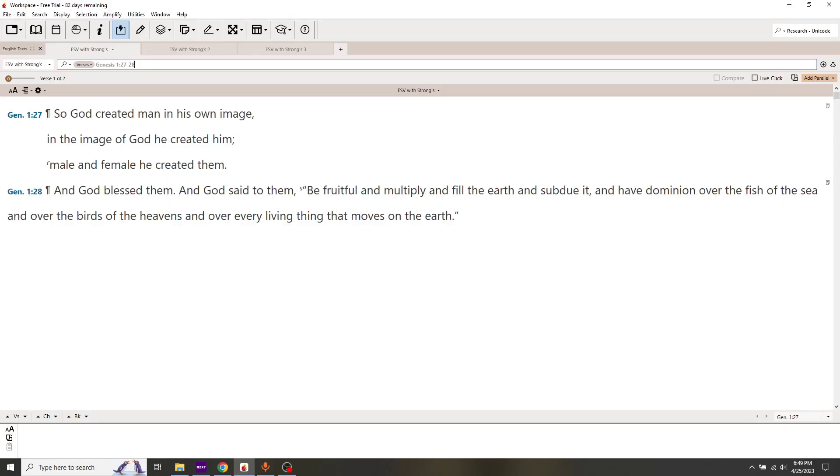We start with the basics. The Bible is clear about God's design for sexuality. It is written in Genesis 1, 27 and 28. So God created man in his own image. In the image of God, he created him. Male and female, he created them.